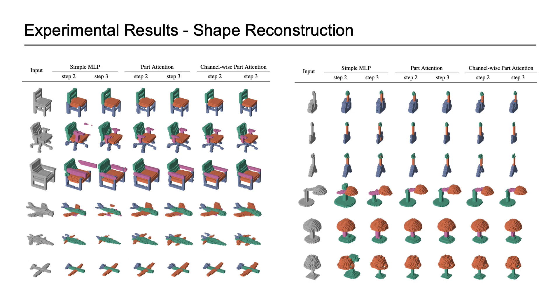For shape reconstruction, compared to the method that does not preserve the part dimension, our method produces more part-coherent reconstruction results on all categories, especially for small-volume parts.